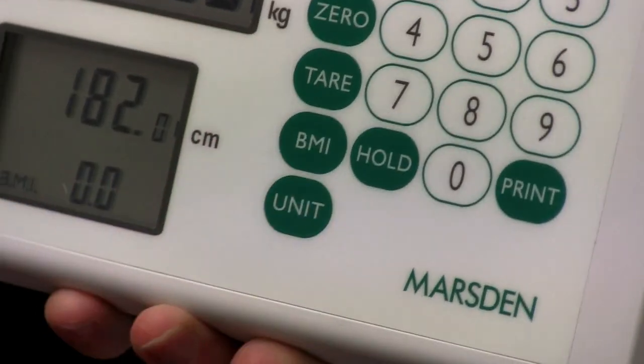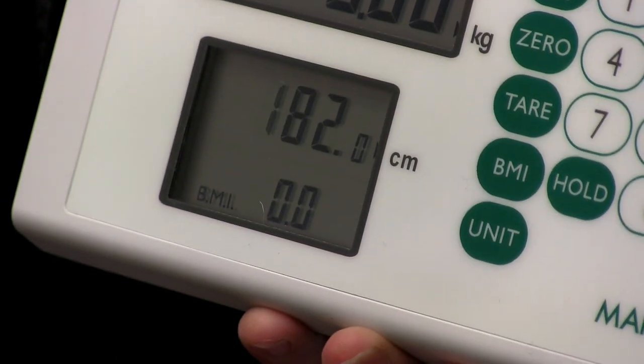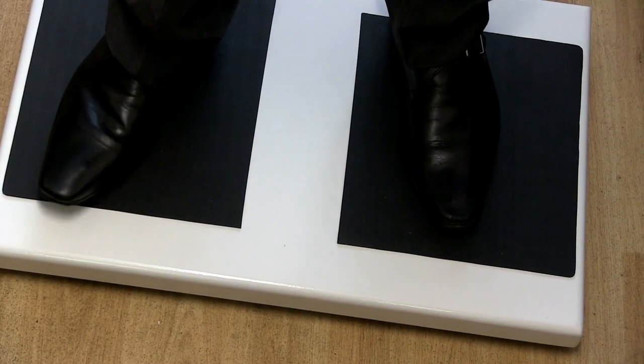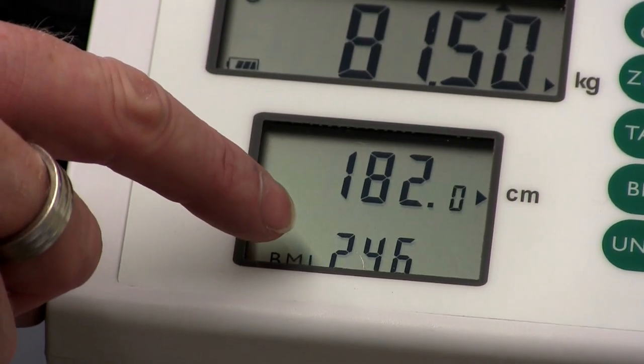The scale can also be used to calculate BMI. Simply press the BMI button and the bottom screen will flash. Enter the height in centimeters using the keypad, stand on the scale and the BMI is instantly calculated, showing on the bottom of the screen.